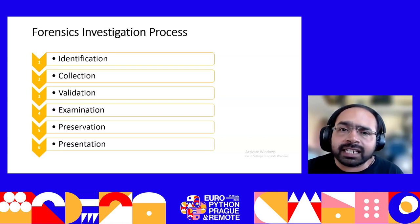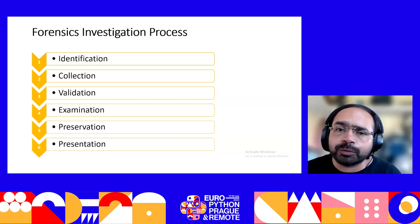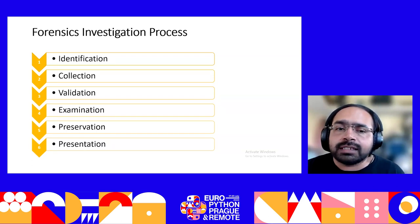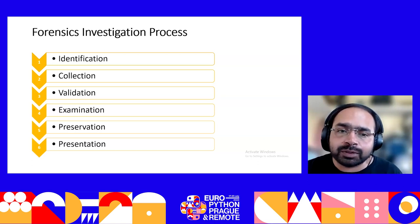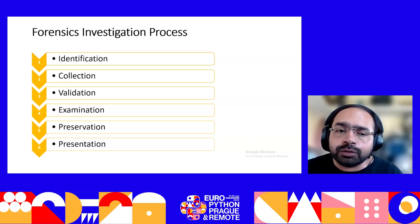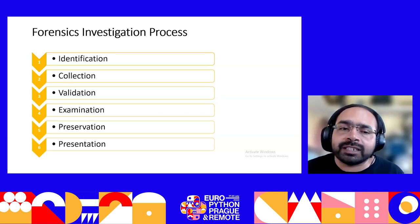When collecting electronic devices such as laptops, mobile phones, or tablets, they need to preserve their state. For example, if they are on, they should not turn them off; if they are off, they should not turn them on. Because some evidence may be present in volatile memory, and changing the system state may modify or delete that information. They need to collect the most volatile information first and the least volatile last.